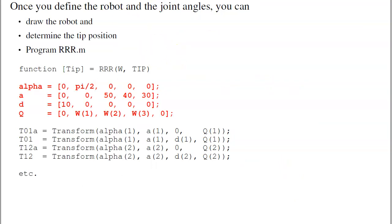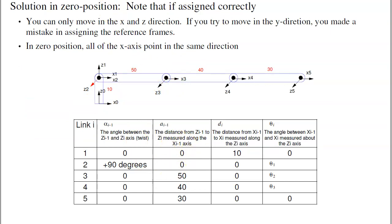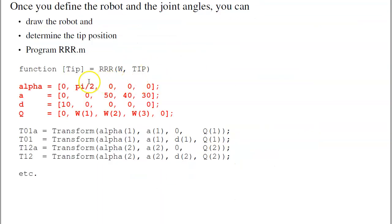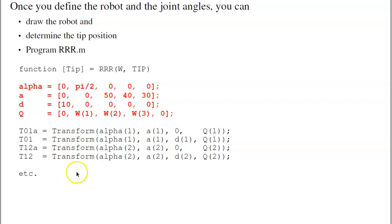Once you define the robot, this parameter matrix defines what the robot is and you can simulate it. The program RRR takes the robot parameters — theta1, theta2, theta3 — and a tip variable used for animation so you can see what the tip is doing. Define these four parameters in red and that specifies the robot. The program calculates the transformation matrix from joint 0 to 1, 1 to 2, 2 to 3, and so on. It takes a point in the Earth reference frame, figures out where it is in each successive reference frame, draws a line, and produces a stick figure to represent the robot.